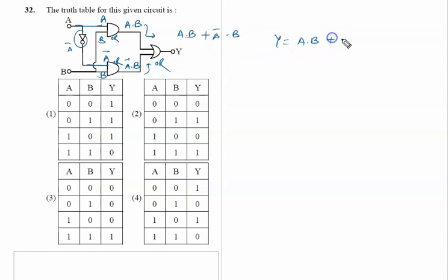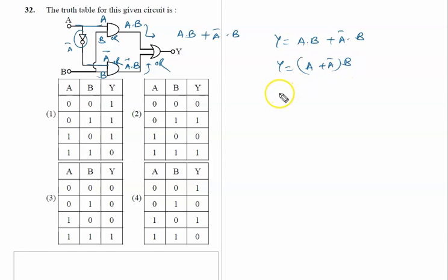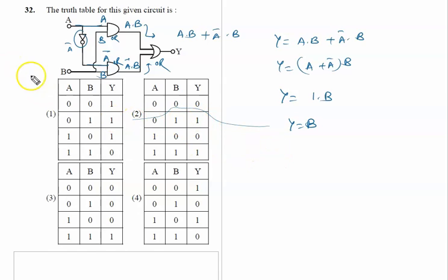We take B common, so it is (A + Ā)·B. Since A + Ā = 1, it is 1·B, and 1·B is B. So finally, the output is only B. Verifying: output is 0, 0 — not possible; 1 — ok; 0 — ok; 1 — ok.